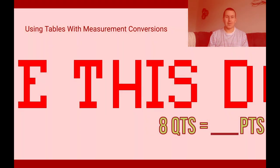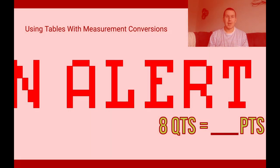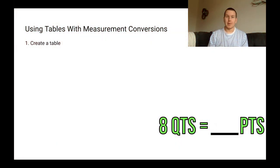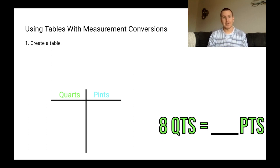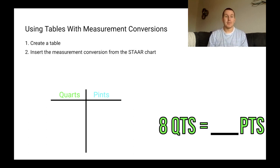All right, so we've got a unit conversion over here at the bottom right. Step one, create a table. We're just going to create a very simple T-chart. We've got quarts on the left side and pints on the right side. Step two, insert the measurement conversion from the star chart. So we're going to need our handy dandy star chart again. Remember, it'll be your best friend as you do these things. So we got to find out how many quarts are in a pint. So we're going to insert that. There's one quart for every two pints. So I know when I have one quart, that means there's going to be two pints.